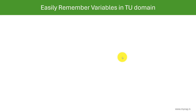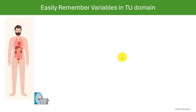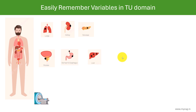We will now see how to easily remember the variables in the TU domain. Consider a patient participating in a clinical trial who has undergone MRI or CT scanning. Tumors are identified in the lungs, kidney, pancreas, prostate gland, stomach, esophagus, and liver. The tumors in lungs, kidney, and pancreas are measurable — their diameter can be measured — making them target lesions. The remaining lesions whose diameter cannot be measured accurately are considered non-target lesions. Each tumor is assigned a unique number.